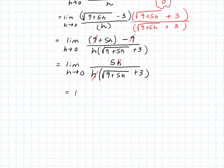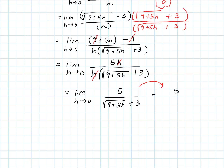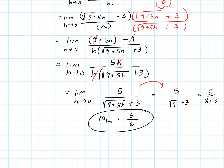That simplifies nicely in the top — the 9s cancel — and we have 5H over H times the square root of 9 plus 5H plus 3. The common factor of H cancels. Now I can take the limit: letting H go to zero, we get 5 over the square root of 9 plus 3, so the slope of the tangent line is 5 over 6.